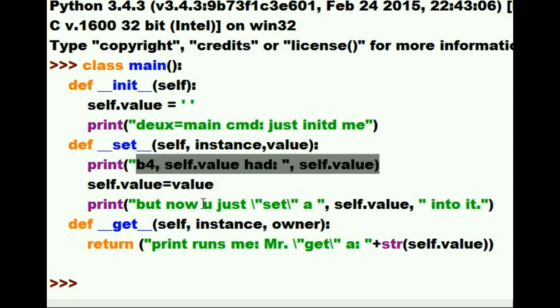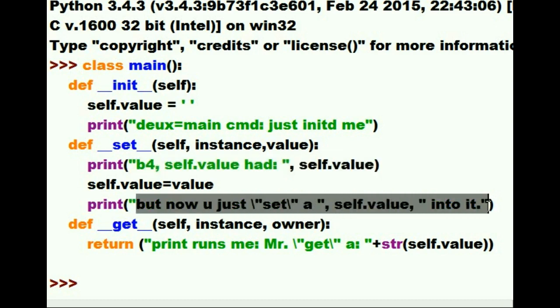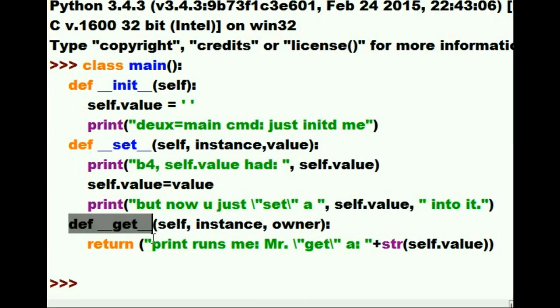It was this, but now it's this. The print command will cause double underscore get to execute. And it simply returns print. The print statement runs me, Mr. Get. And who am I? I am a, and then it prints out the string version of self.value, which is the variable we defined in the double init function, the double init function.